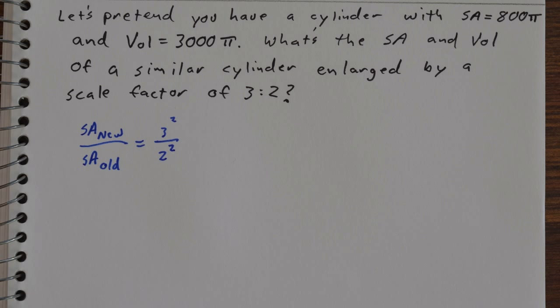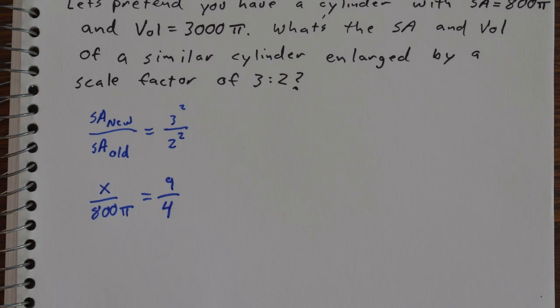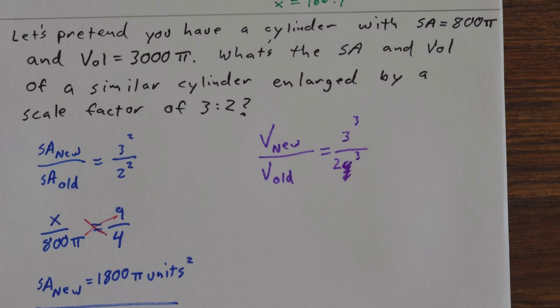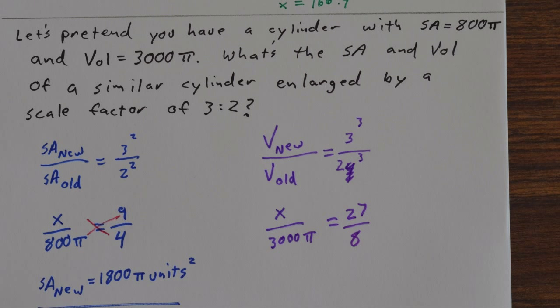So this is again a proportions problem. We know new over old will follow our scale factor, and so surface area of new over old will be scale factor squared, so 3 squared over 2 squared. Sub in what you know and solve for the unknown. Likewise with volumes, instead of 3 over 2 we want 3 cubed over 2 cubed, and so we'll sub in the known value and solve for the unknown.